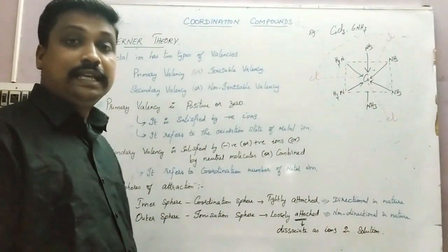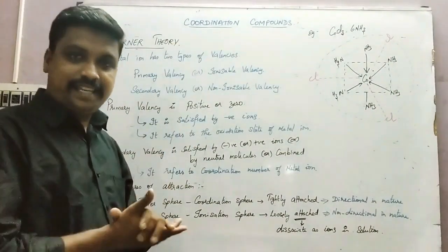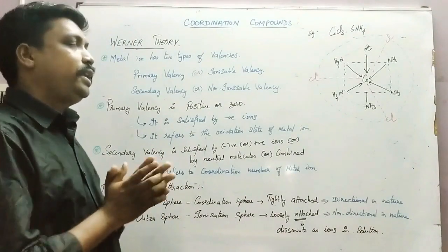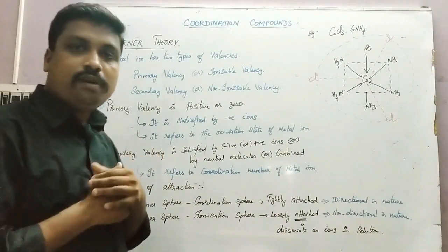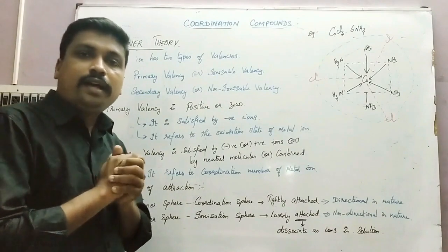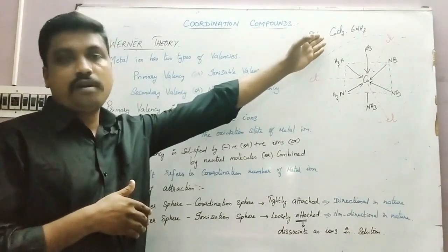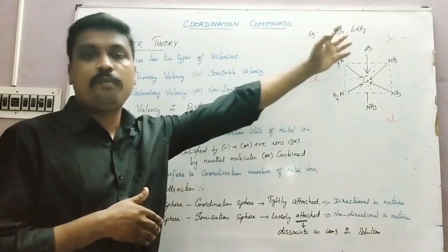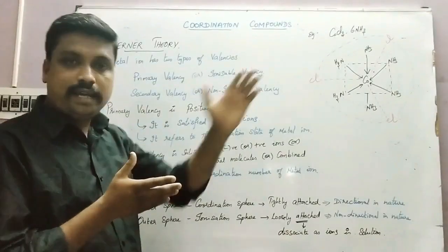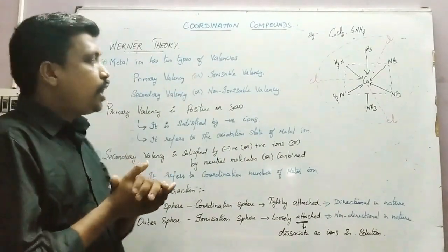Welcome students. In this class we are going to discuss about Werner's theory — Werner's theory of Cobalt Chloride with Ammonia. That is very complex. According to him,